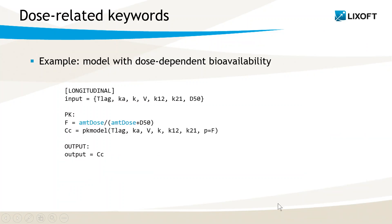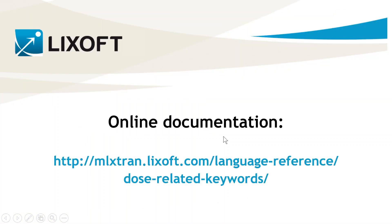In this second example, AMTDOSE is simply used in the structural model to implement a dose-dependent bioavailability F, which is then used in the macro PK model. Remember that for both examples, the values written by the keywords depend on all doses received by each individual, whatever their administration type. That's it for today, see you next week for another video!